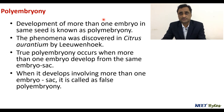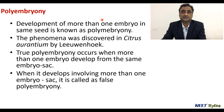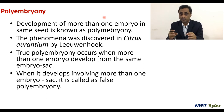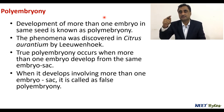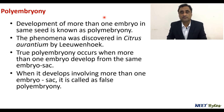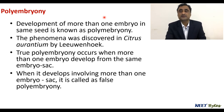Polyembryony — there are different modes by which it can be formed. This phenomenon was first observed in citrus, where ovules from two different ovaries get fertilized, leading to polyembryony. There are two types: true polyembryony and false polyembryony. If more than one embryo is formed within the same embryo sac or from tissues within the embryo sac, it is called true polyembryony. If polyembryony is formed from tissues outside the embryo sac, it is called false polyembryony.